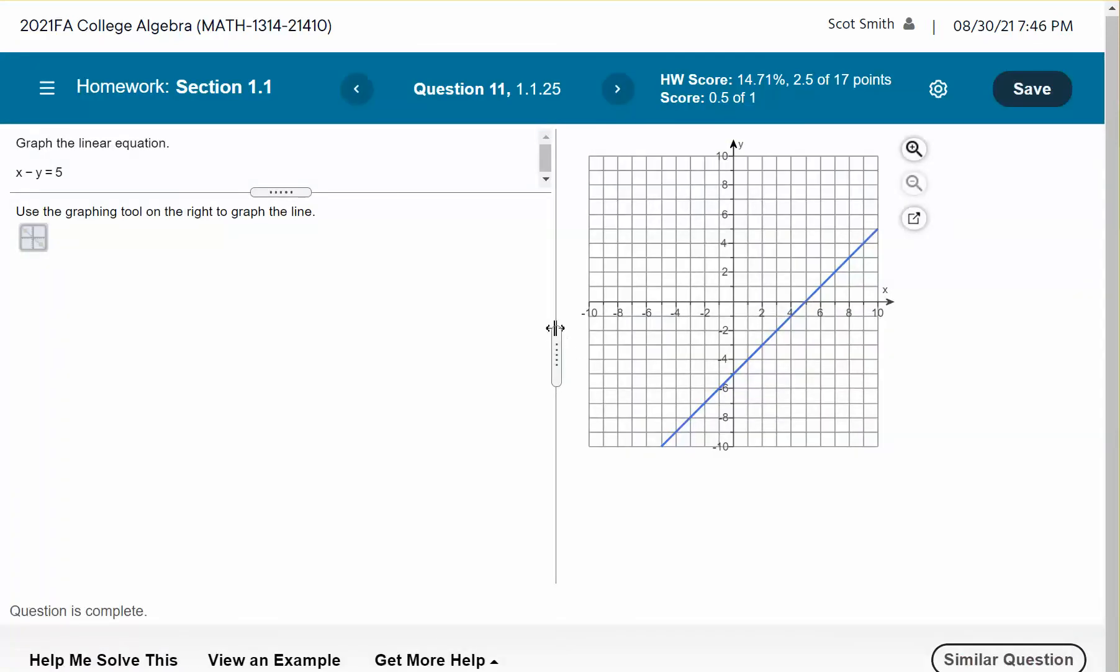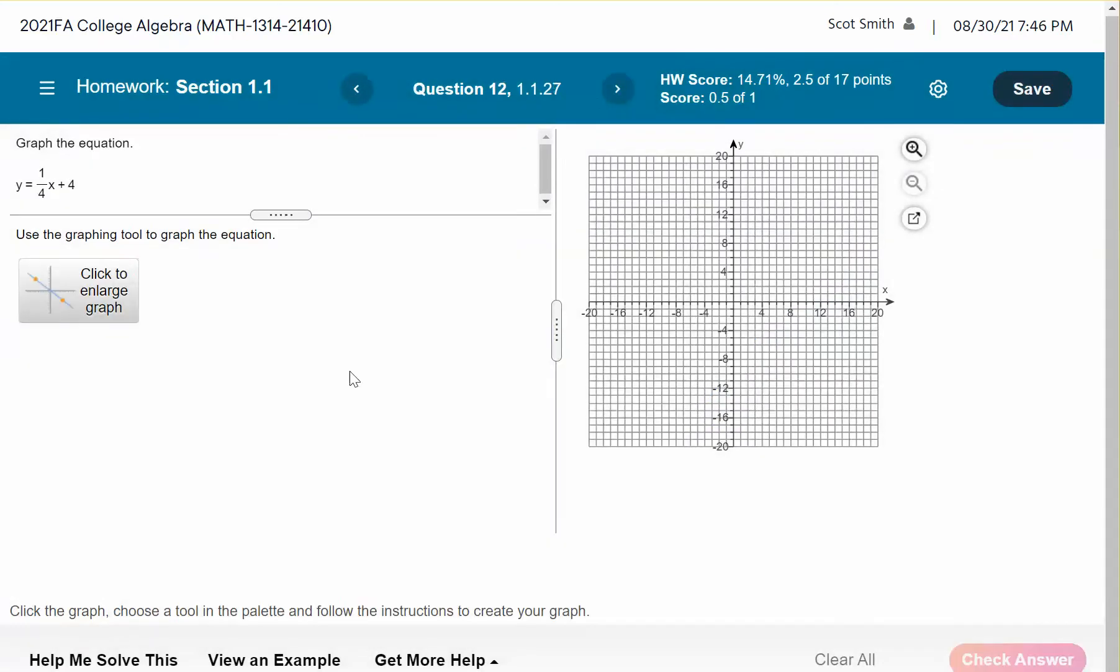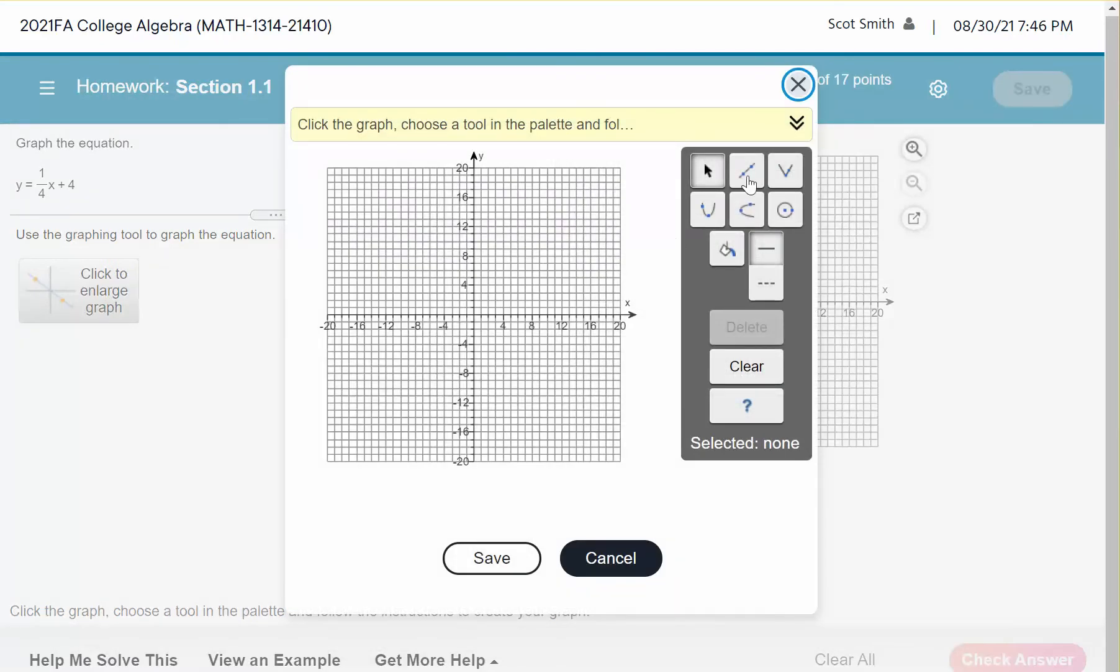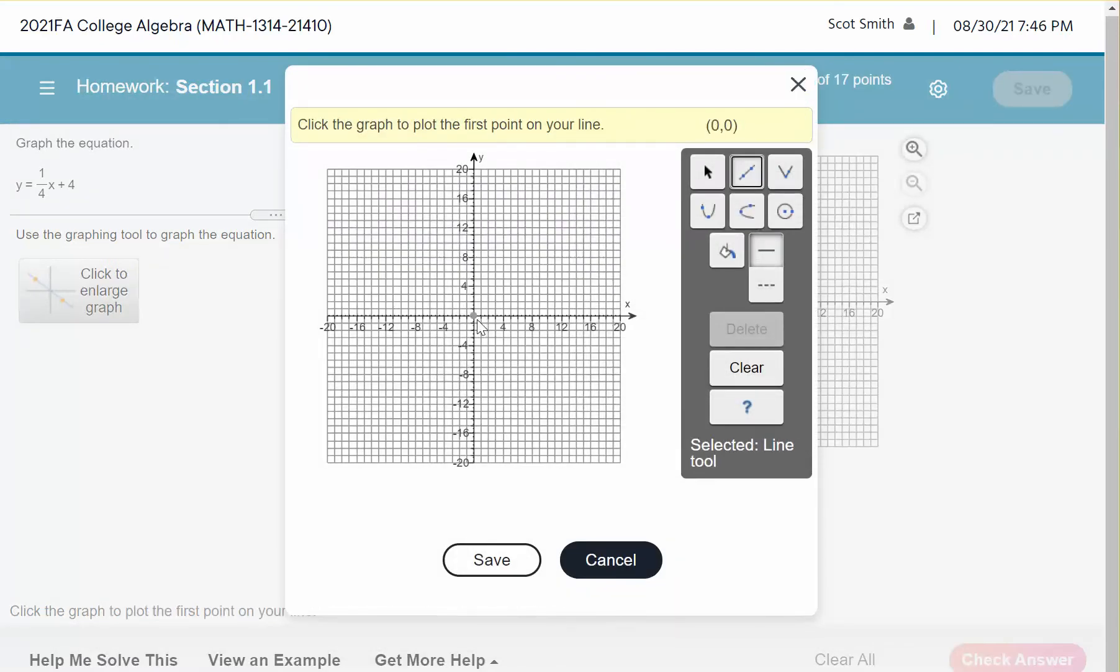All right, let's go to number 12. So here we're going to be using the slope-intercept method. And this is the easiest technique when you have an equation solved for y, and it's a linear equation. So we're going to start at 0, 4. So again, click on the template, go to 0, 4, and click.